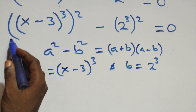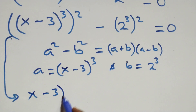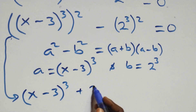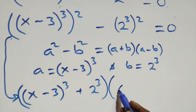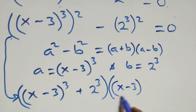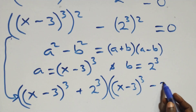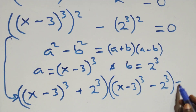Then, what we have here? Following this, it becomes: x minus 3, 4 raised to power 3, plus 2 raised to power 3, into brackets, and also open brackets, x minus 3, 4 raised to power 3, minus 2 raised to power 3, close brackets, equals to 0 here.